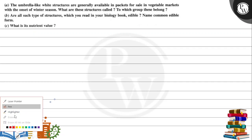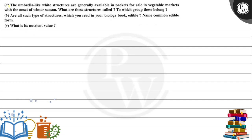Hello Bacho, let's read this question. The umbrella-like wild structures are generally available in a packet for sale in a vegetable market with the onset of winter season. What are these structures called? To which group do these belong? Are all such type of structures which you read in your biology books edible? Name the common edible forms.